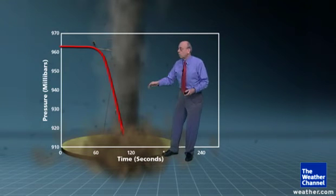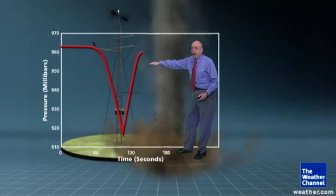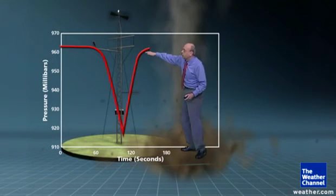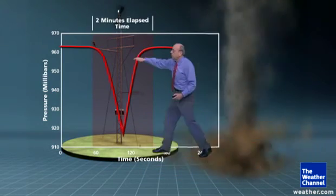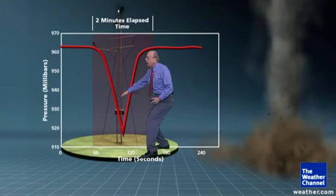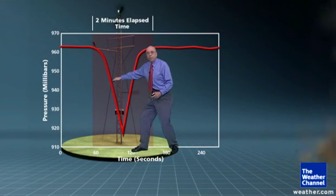And then as the tornado goes back beyond and passes by the site, the pressure rises back up and then continues back to about its normal value. So all told there was about a one minute drop and about a one minute rise, the fastest winds taking place about halfway through the pressure drop and about halfway through the pressure rise.